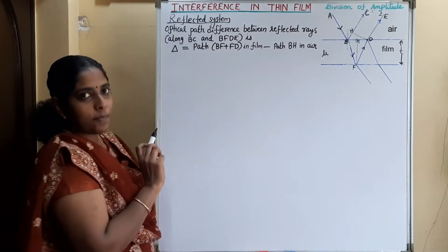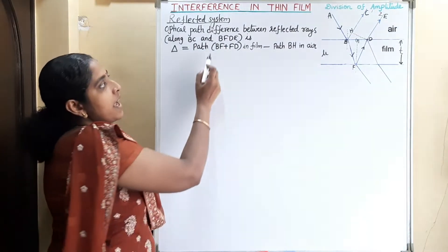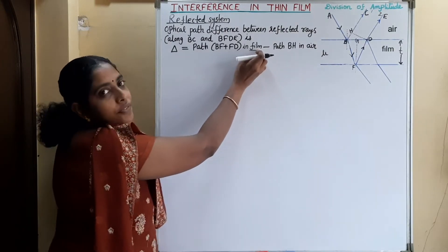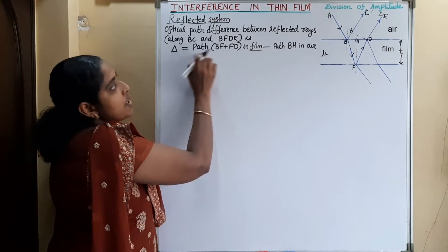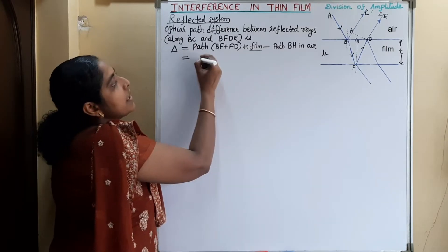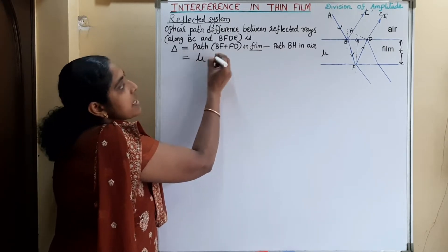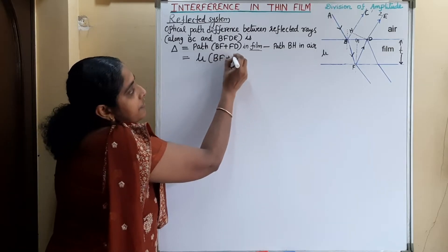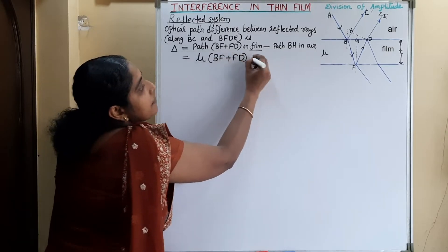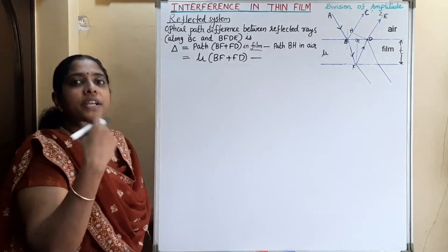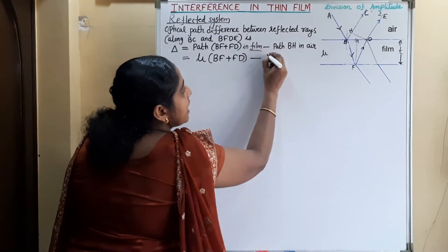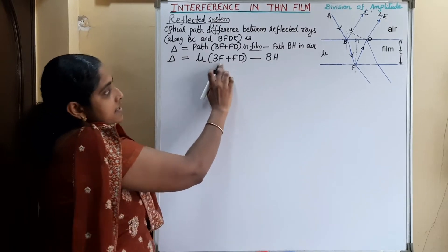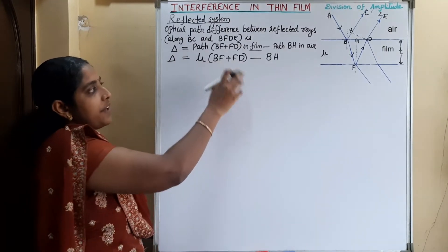Here we are considering the optical path difference and this path is in the film, so we have to consider the refractive index of the film also. So this optical path will be the refractive index times (BF plus FD) minus BH in air. Since the refractive index of air is 1, we can directly write BH. Now we can find out these distances BF, FD, and BH.